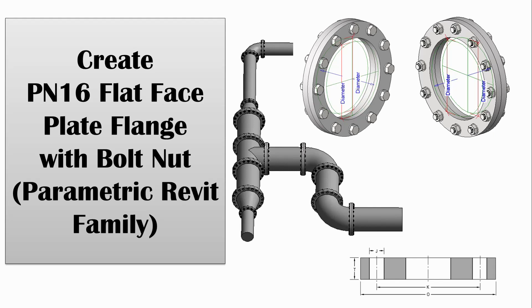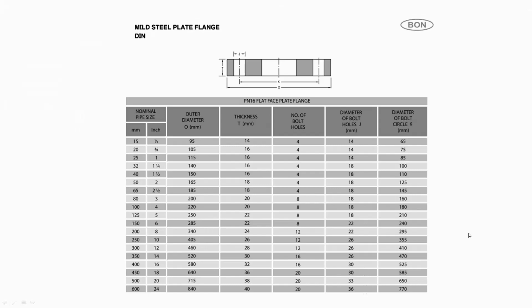Hello everyone. Today I would like to show you how to create a PN16 flat faceplate flange rivet family with bolt nut. In this tutorial, I will use and load in the created bolt nut which is parameter controlled by lookup table. You can find and watch how to create bolt nut and washer in the channel. I will create a bolt nut array in generic model face base and then load into and combine in the main family. This is the manufacture specifications of PN16 flat faceplate flange.